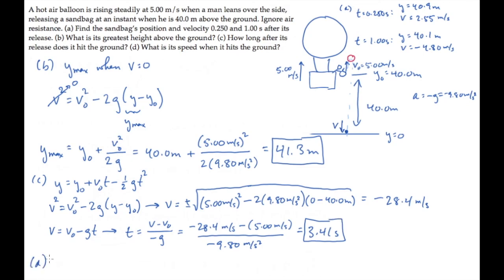Part D asks us for the sandbag's speed when it hits the ground. That's the magnitude of the velocity when it hits the ground. We already know that. So taking the magnitude gives us 28.4 meters per second.